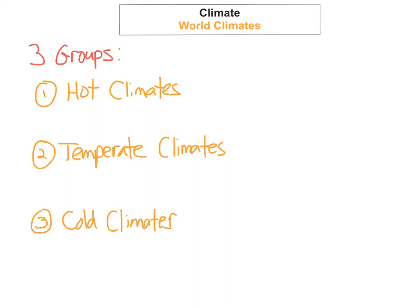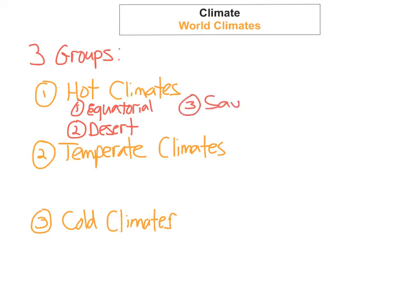For the hot climates you've got a few different types. You've got equatorial, the second one is hot desert, the third climate is savannah, and the fourth climate is monsoon.